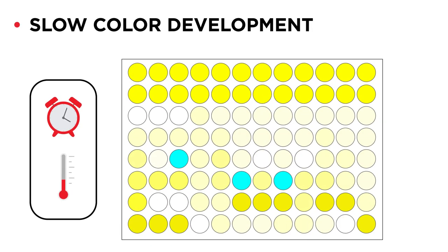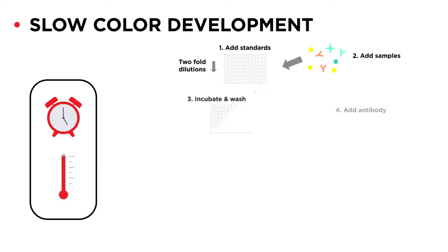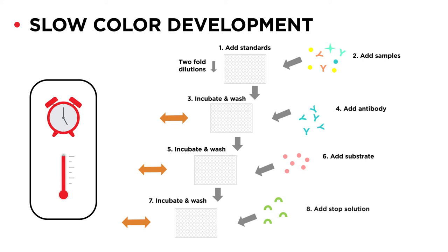Controlling the incubation temperature and timing is crucial to achieve color development in a timely manner. Manual ELISA includes moving the plate to and from incubators while making sure to preheat the incubator and time the incubation.